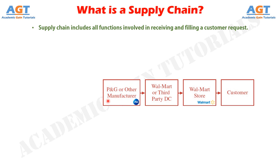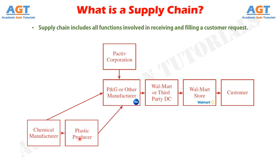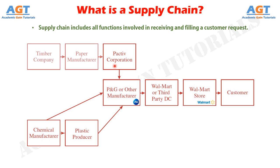The P&G manufacturing plant receives raw material from a variety of suppliers, who may themselves have been supplied by lower-tier suppliers. For example, packaging material may come from Pactiv Corporation, which is formally known as Tenneco Packaging, while Pactiv receives raw materials to manufacture the packaging from other suppliers. This supply chain is illustrated in this figure, with the arrows corresponding to the direction of physical product flow.